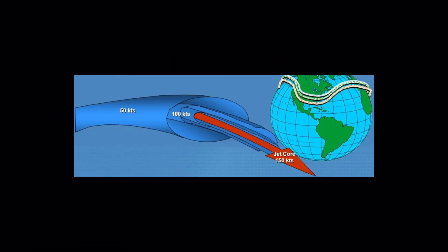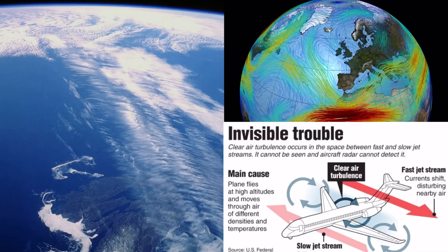There is another property of a jet stream: the temperature along the core of a jet stream always remains constant. So while there is warm temperature and cold temperature around the jet stream, along the core the temperature always remains constant.